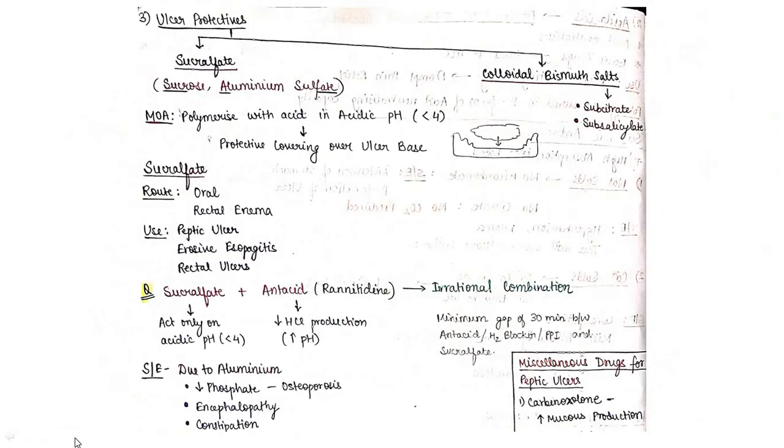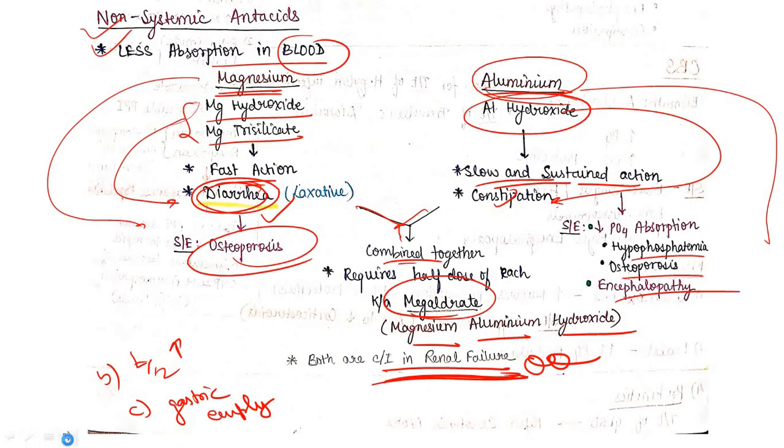These are the two groups of drugs. Ulceroprotective we will discuss in next video. So we have discussed about PPI, H2 blockers, antacids. Thank you.